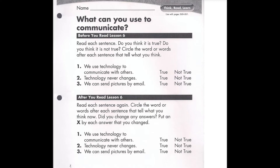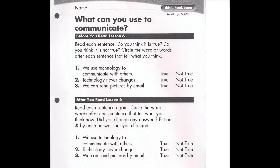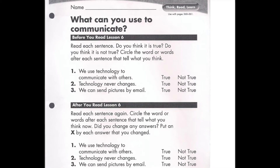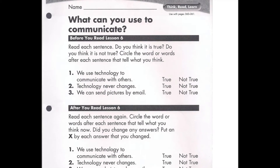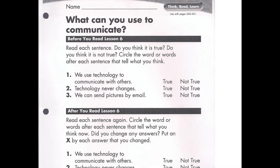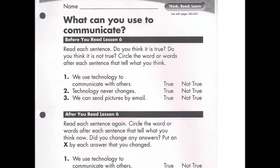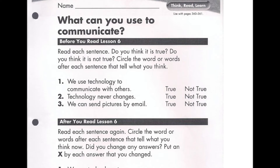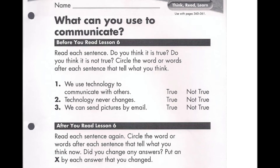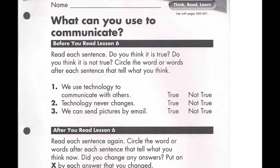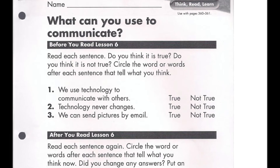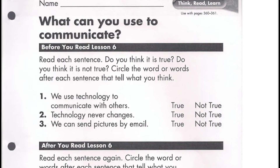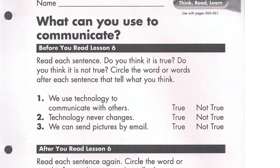We're going to read each sentence and circle if you think it's true or not true. Question number 1 says: we use technology to communicate with others. Is this true or not true? Number 2 says: technology never changes. Is this true or not true? And lastly, number 3 says: we can send pictures by email. Is that true or not true?